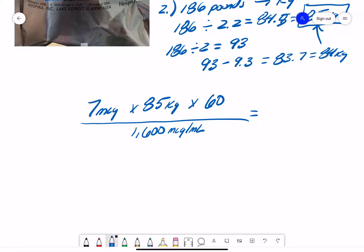And we're going to divide that by our concentration, which is 1,600. So if we do that math problem, we come up with 7 times 85 times 60 divided by 1,600. We get 22.31 drops per minute.